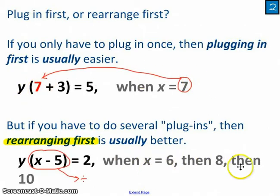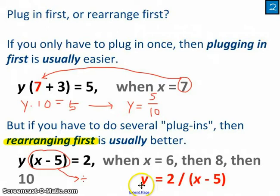But if I'm given a number of different X values, I would suggest rearrange the equation first, so that you've got it written in the mode where the variable that you want is isolated. So down here, I've got now Y equals 2 divided by X minus 5, and that's going to be a whole lot easier for me to just plug 6 in here, and 8 in here, and 10 in here.